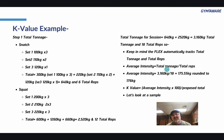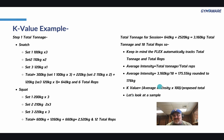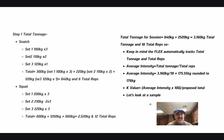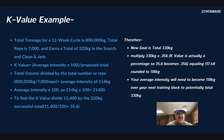Average intensity simply means total tonnage divided by total number of reps. In this example, that's 3,160 divided by 18, giving an average intensity of 175.55, rounded to 176 kilograms. The k value equals the average intensity times 100, divided by the proposed total.